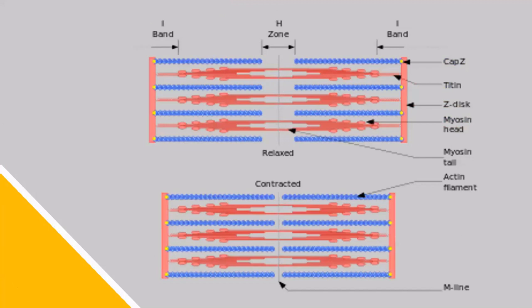We often see a sarcomere represented like this in 2D. The myofibril contains various myofilaments, including myosin in red and actin in blue. According to the sliding filament theory, the different myofilaments slide past each other during a crossbridge cycle.